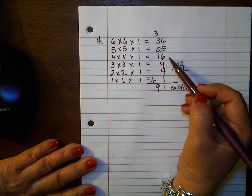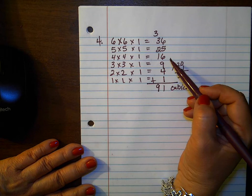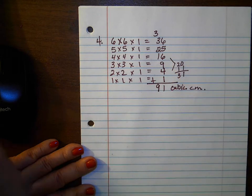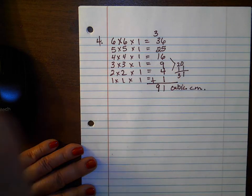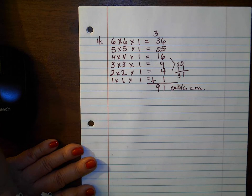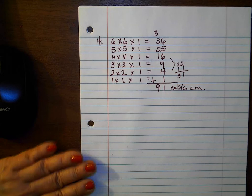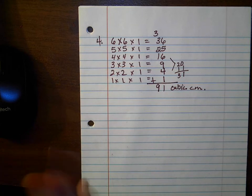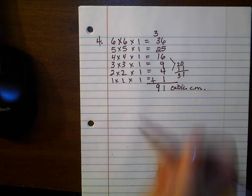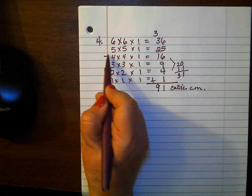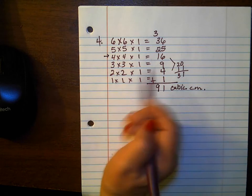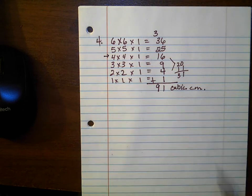36, 25 — I missed one layer on the practice one. It was 6, 5, 4, 3, 2, 1 layers. Now it makes sense. I got stuck because I did not count one of the layers, and that's why it threw me off.